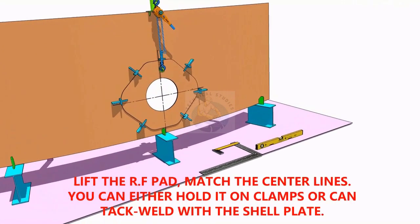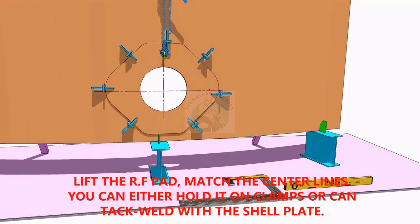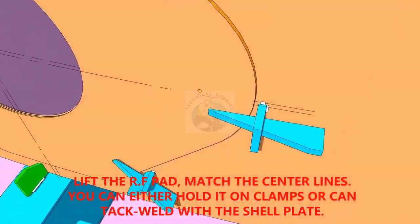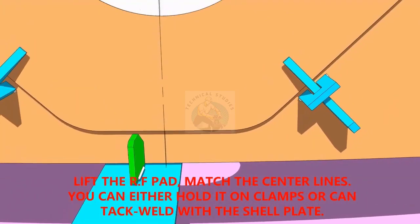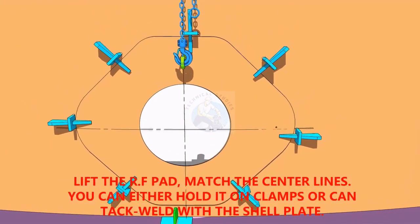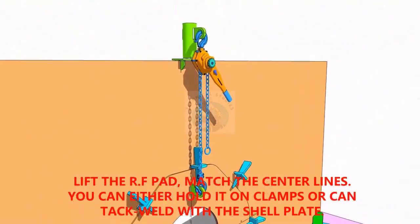TAC weld the reinforcement pad on the shell plate. You can either TAC weld directly on the shell or fix it with clamps as shown. Make sure the center lines on the shell plate and the pad are matching.